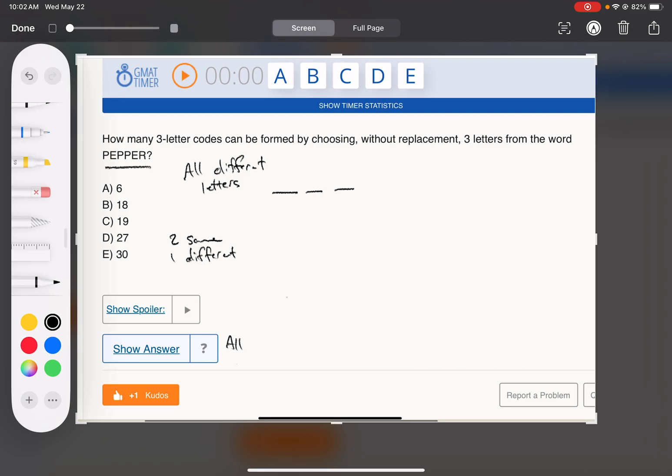So first of all, this top and bottom case are easy because if they're all different letters, I really just am choosing like P, E, R are the letters I have to choose from because I'm taking out from consideration their identicals because I've decided in this situation I'm not choosing all different letters. So this is just three, two, one, which is six.